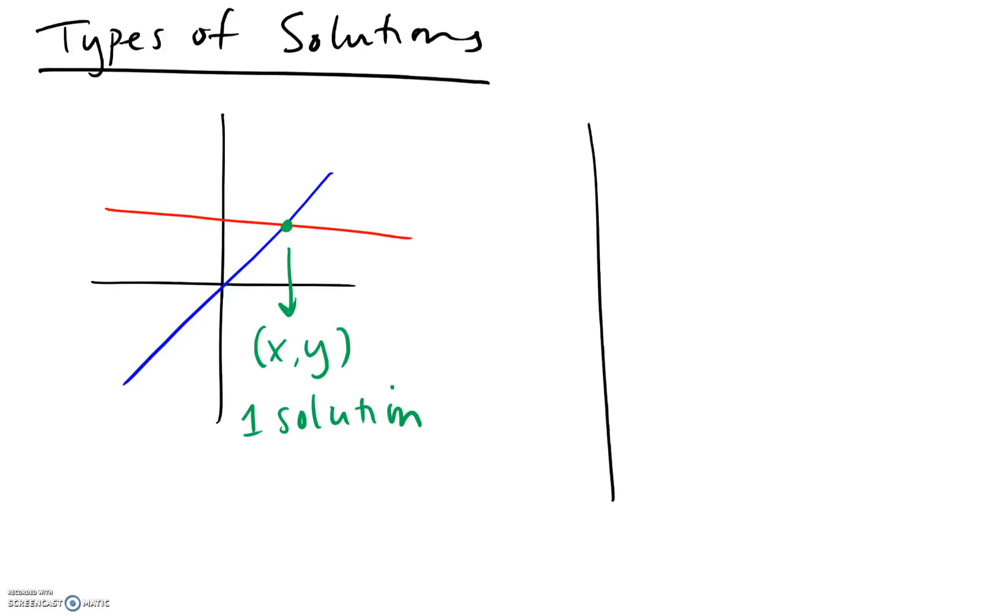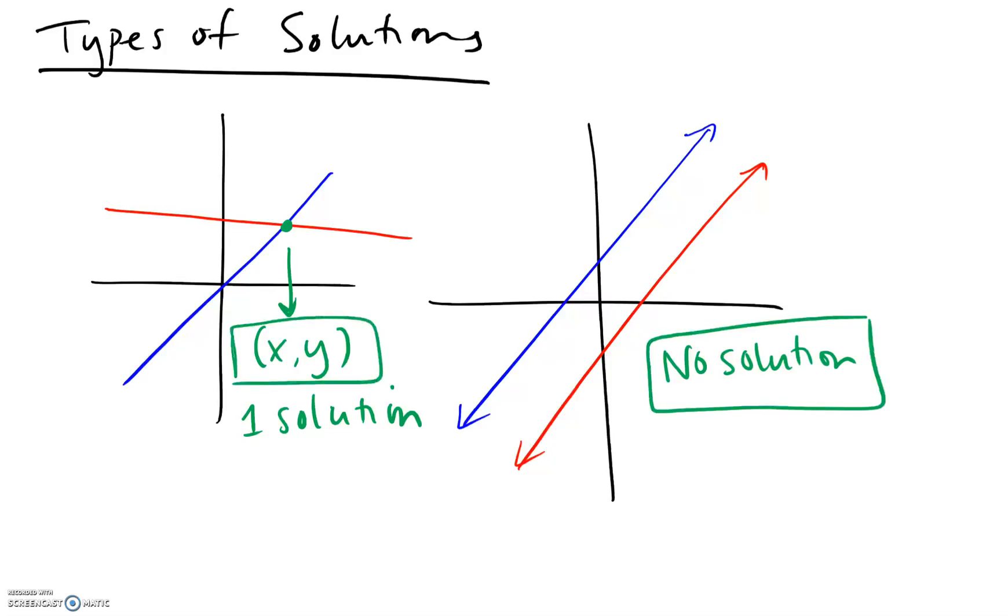The other thing that could happen - we could have one of those special things with lines where we have our two lines and they are actually parallel to one another. Two parallel lines are like train tracks. They will never cross each other. In this case, you will have no solution. That is what you write down as no solution. There are zero solutions to this. Your two lines are parallel.